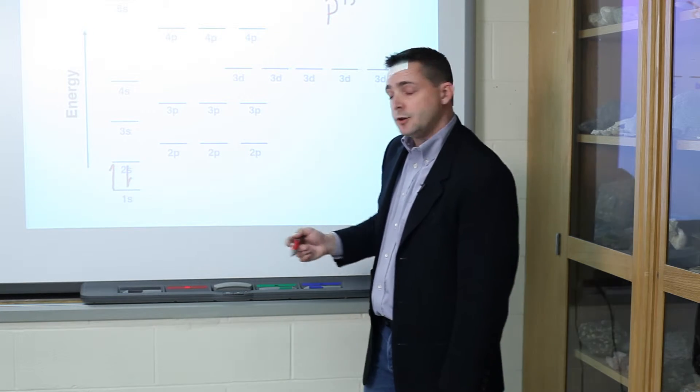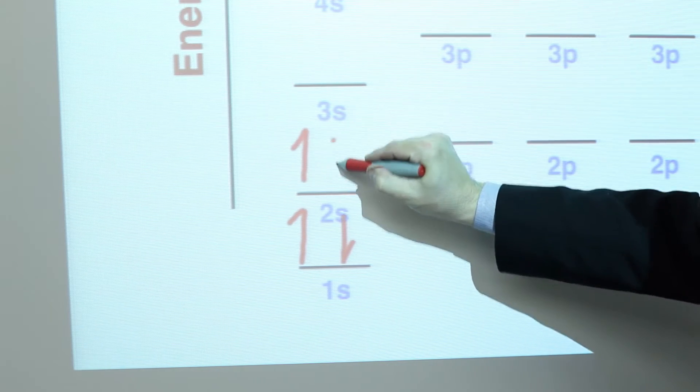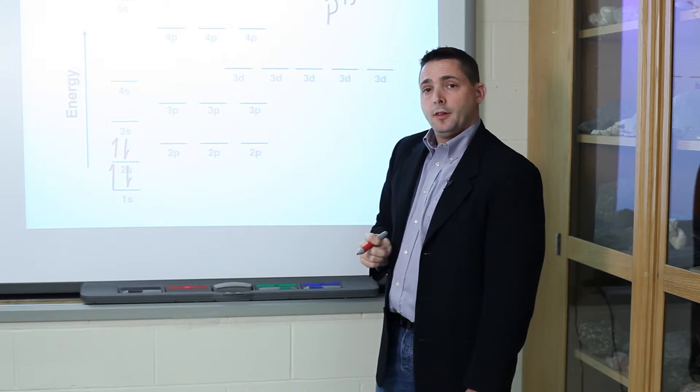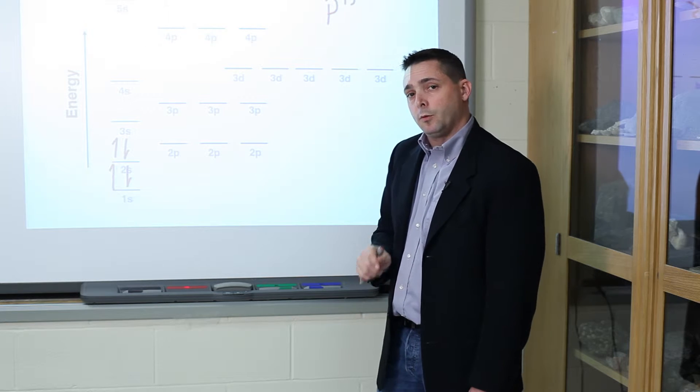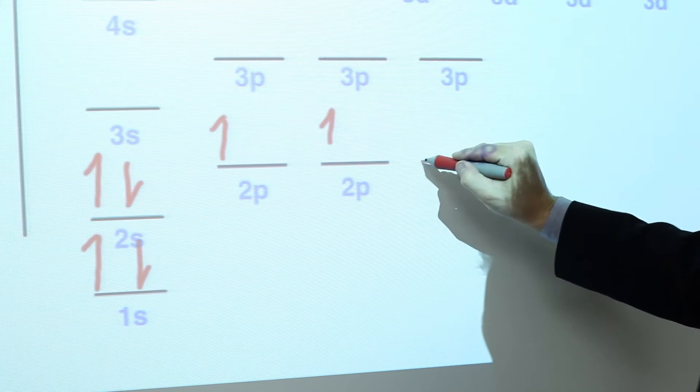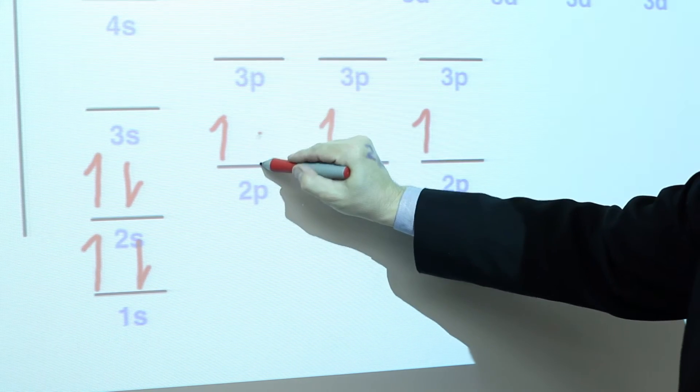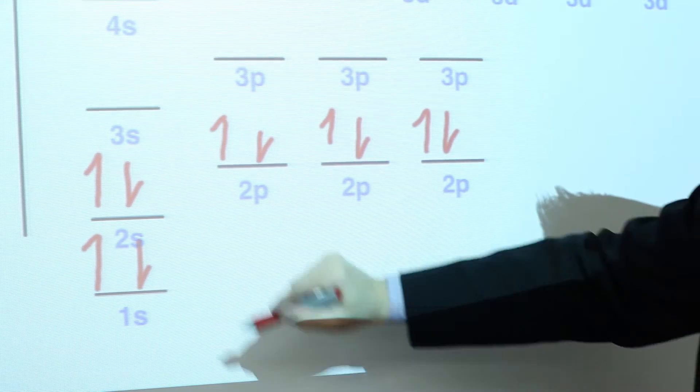Then we move to the next energy level. We place the third electron, the fourth electron. Then we're going to move to the 2p orbitals, and we'll fill each orbital with one electron at a time: 5, 6, 7, and since the orbitals are not filled, we'll come back: 8, 9, 10, and move on to the next energy level.